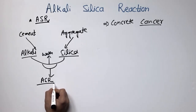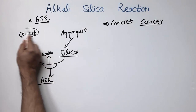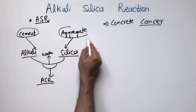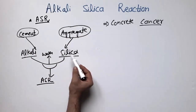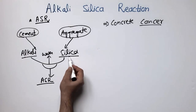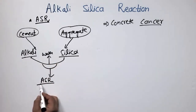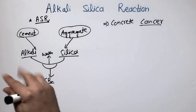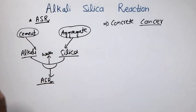So ASR comes from two components: from the cement we have alkali contents like sodium and potassium, and from the aggregates we have amorphous silica, which is very reactive. When the amorphous silica reacts with the alkali components of the cement, it forms an expansive gel which expands the concrete and creates cracks throughout the concrete structure.